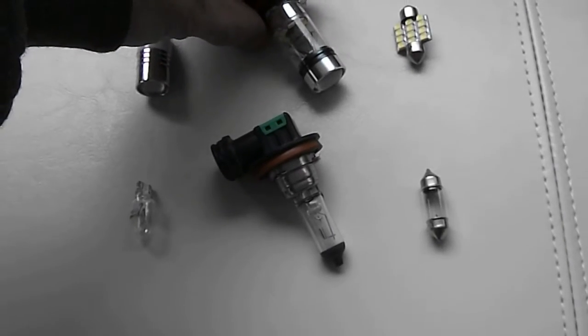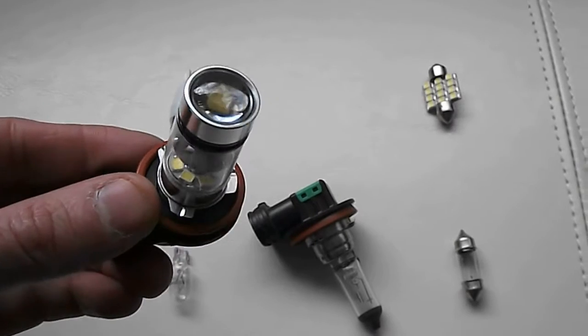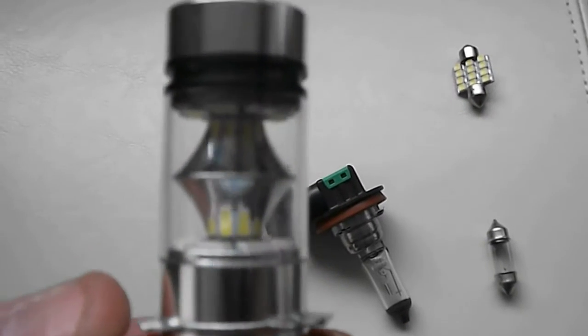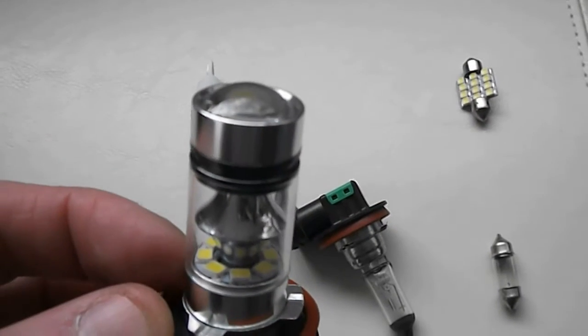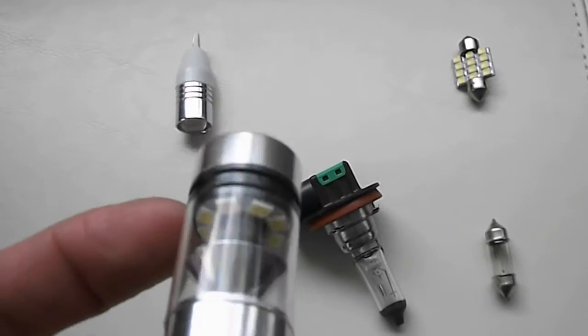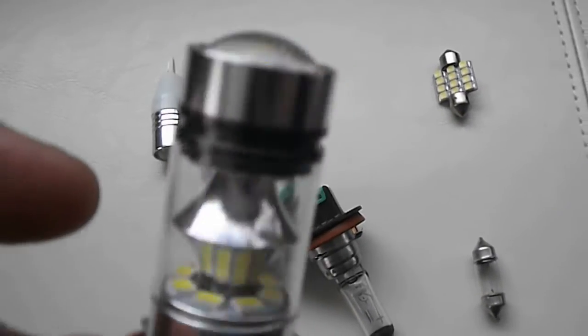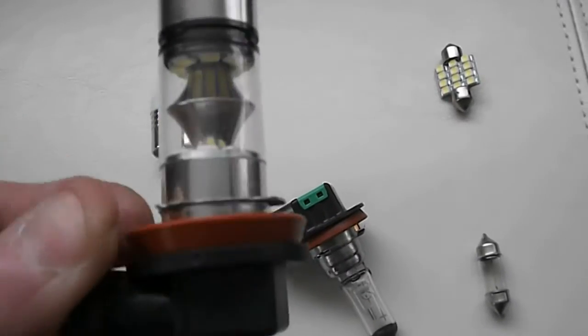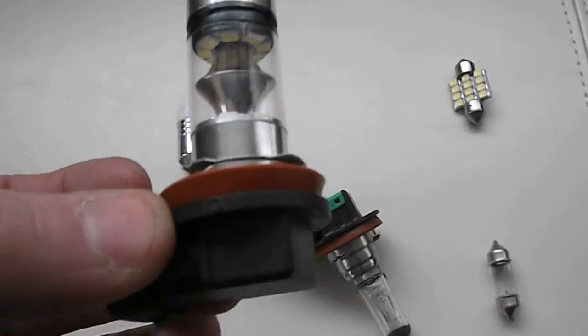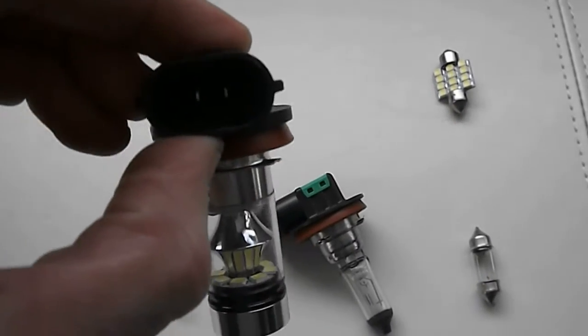And then next we have the H11 fog light bulb. Now this is an interesting design. I haven't seen anything quite like this one. It's got this conical shape here in the middle reflector. It's got eight SMDs on the bottom here, eight SMDs on the top, all lined up all the way around. And then it's got four on the front as well. So it's kind of an interesting looking bulb. There's no heat sink, no fan, quite a bit cheaper than the last one I put in.